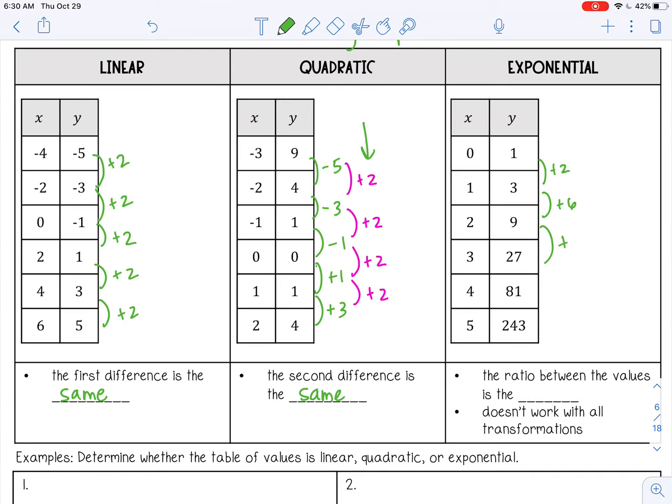Now I can already tell this is not linear because they're not the same. So then what I would do is check for quadratic. So from 2 to 6, that's plus 4. From 6 to 18, that's plus 12. So it doesn't look like it's quadratic either. So once you determine it's not one of those, well, it's probably going to be exponential because that's all we have left.